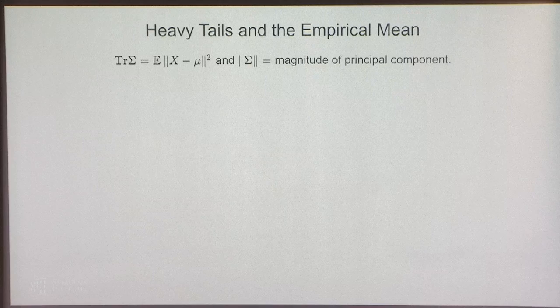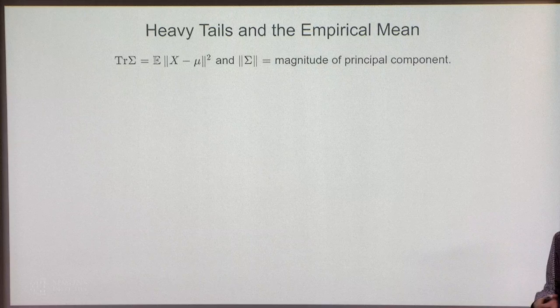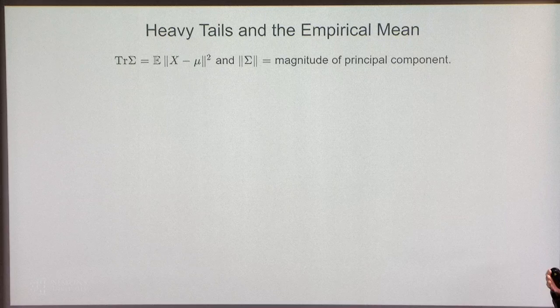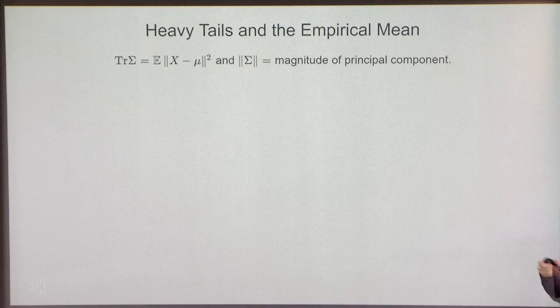The empirical mean has poor — meaning too-large — confidence intervals in heavy-tailed situations. The intuition is: if you have samples from a heavy-tailed distribution and want something to happen with probability 1 minus delta, you cannot rule out that the sample list has some egregious outliers — vectors of very large norm far from the mean. These vectors will destroy the empirical mean because it is quite sensitive to such outliers.